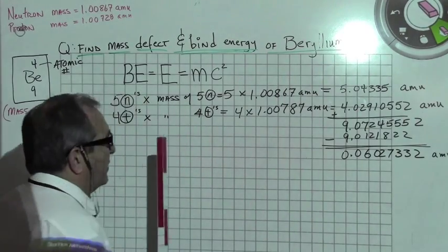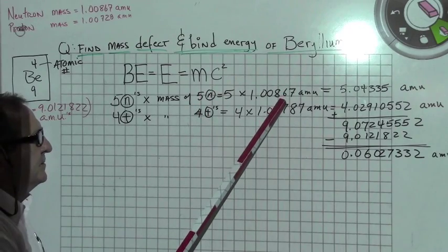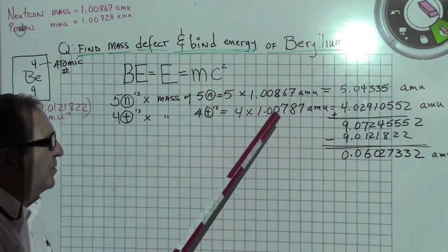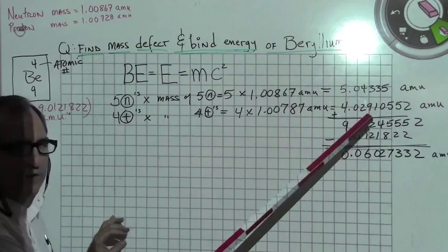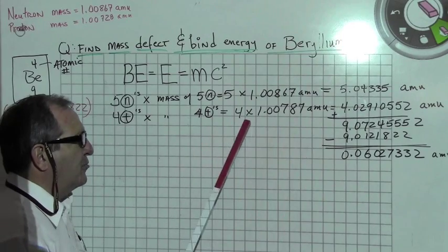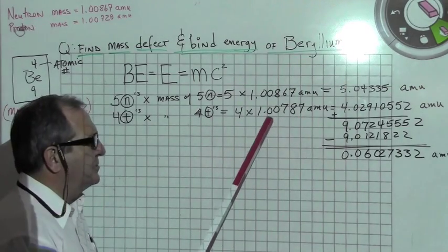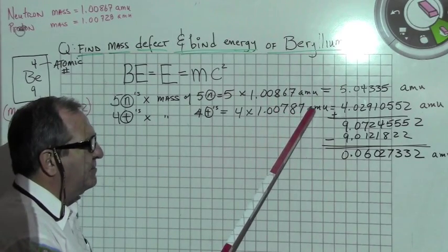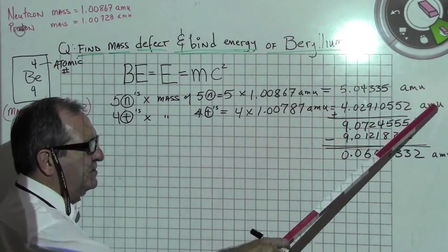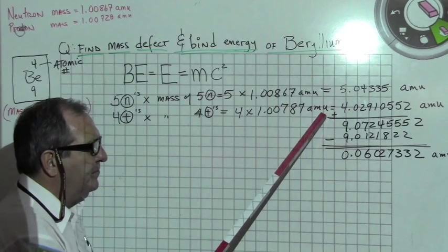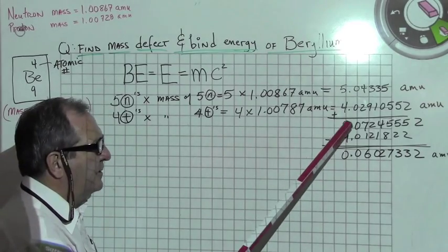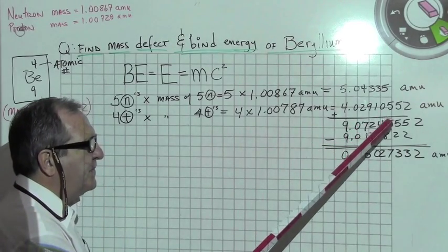So, what we've done here is I've multiplied the 5 neutrons and the mass of this large number here. This is the accepted value for the mass of one neutron, and we get 5.04335 atomic mass units. And 4 protons have to multiply 4 times the mass of one proton, which is 1.00787 atomic mass units. This is a total of 4.02910552 atomic mass units. I add them together. I get a total that it should have a mass of 9.07245552.